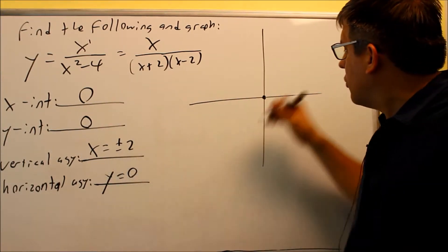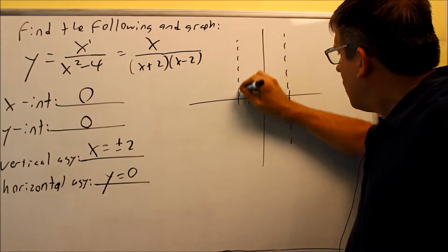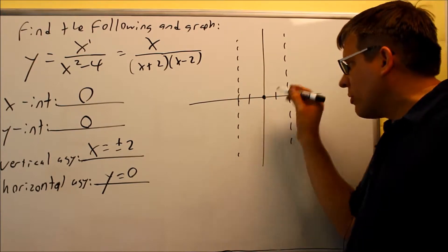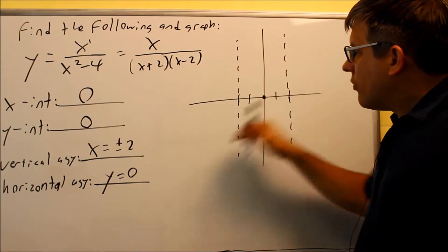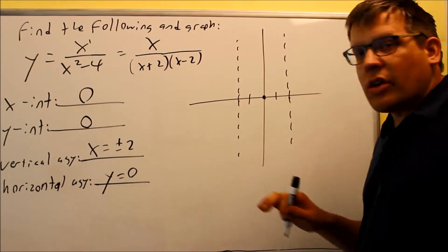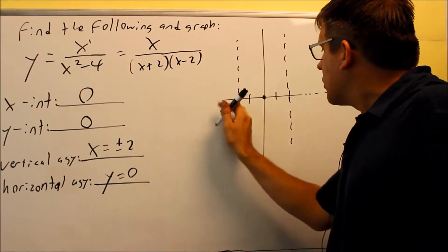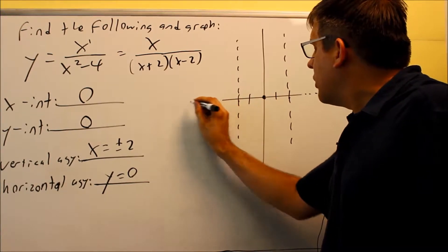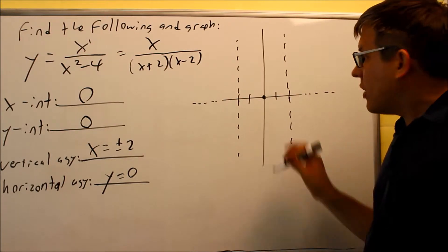It also goes through plus 2, and it also goes through negative 2. So plus 2 and minus 2. Okay, that takes care of the two vertical asymptotes. Now, horizontal asymptote is Y equals 0. Okay, so Y equals 0 means that your X axis is actually going to be your asymptote line, so we have this.